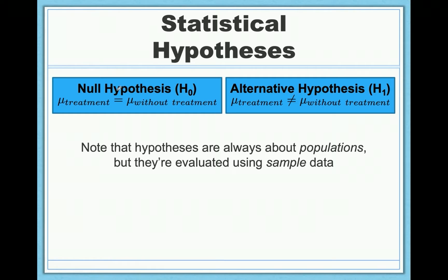So the null would look something like this. The mean that you would find after giving people this treatment would be equal to the mean you find for people who don't take that treatment. This is a kind of fancy roundabout way of mathematically stating what we're talking about here. The null means no effect. Giving people this treatment will not change the mean if you didn't give them the treatment at all.